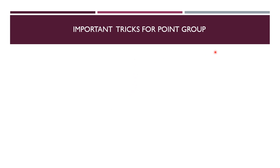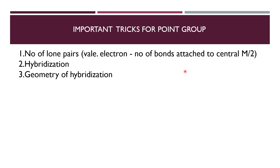Important tricks for the point group — three important tricks are there. We will see one by one. If you keep these three points in your mind, it is easy for you to solve. The first one is the number of lone pair of electrons. If a compound is there, first we need to know how many lone pair of electrons in that compound on the central metal atom. The formula is: valence electrons minus number of bonds attached to the central metal atom, divided by 2.